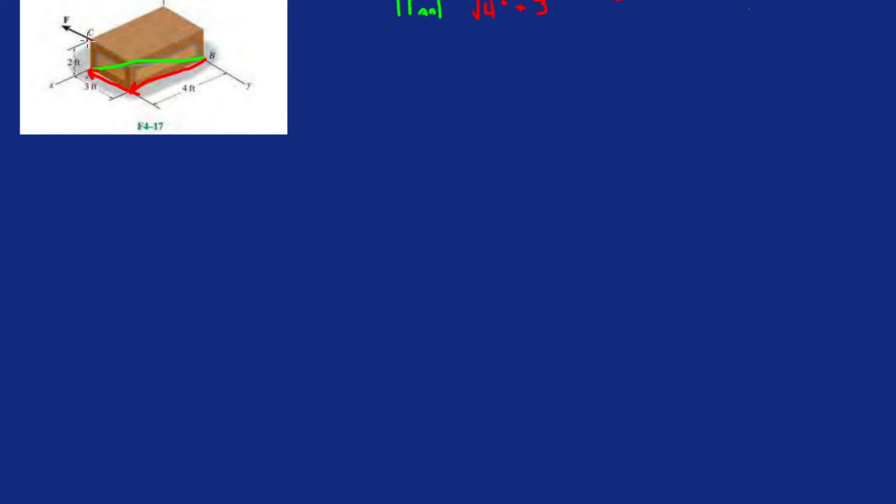Now we can either take the moment about the origin, but the axis AB has a point on that line either at A or B. Because my force is closer to A, it's going to be easier to compute the distance from A to C than from B to C.